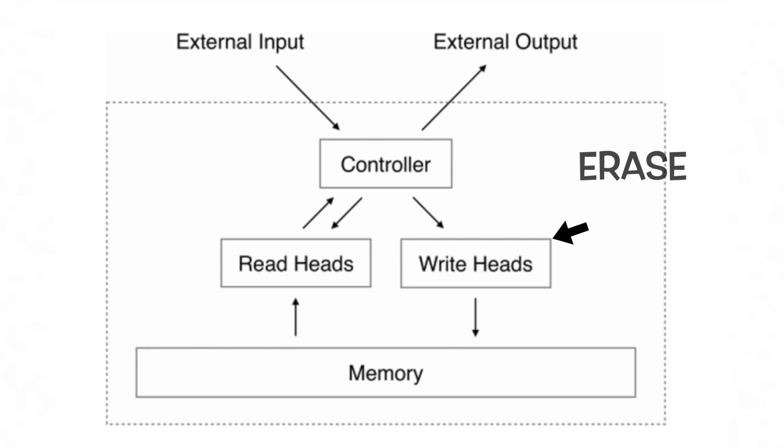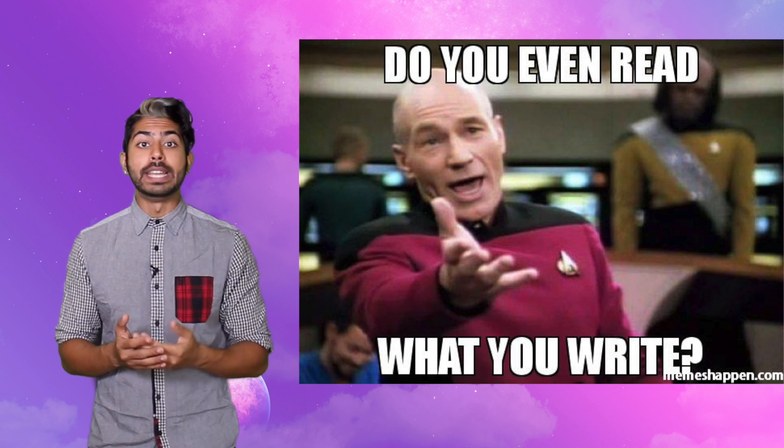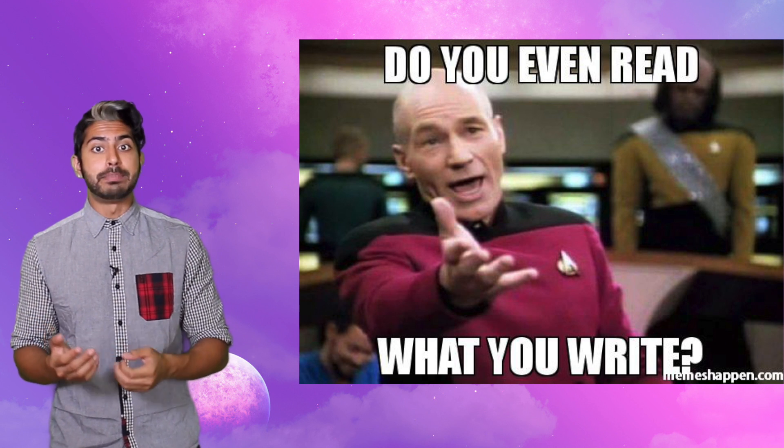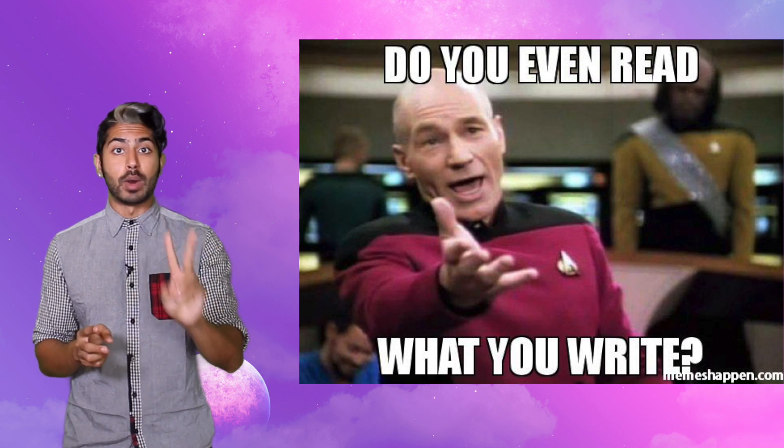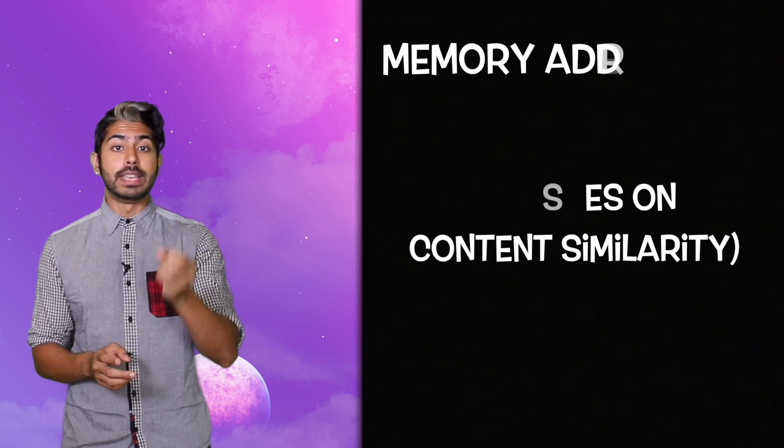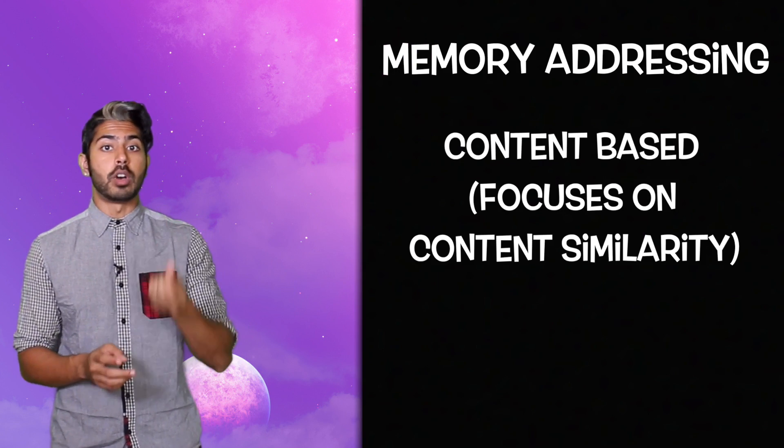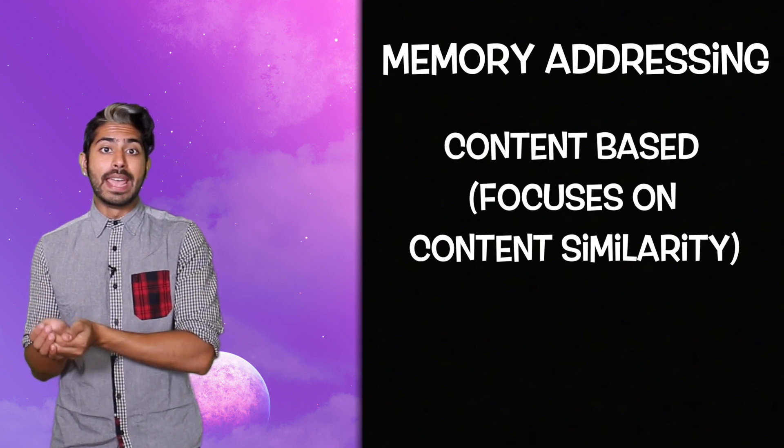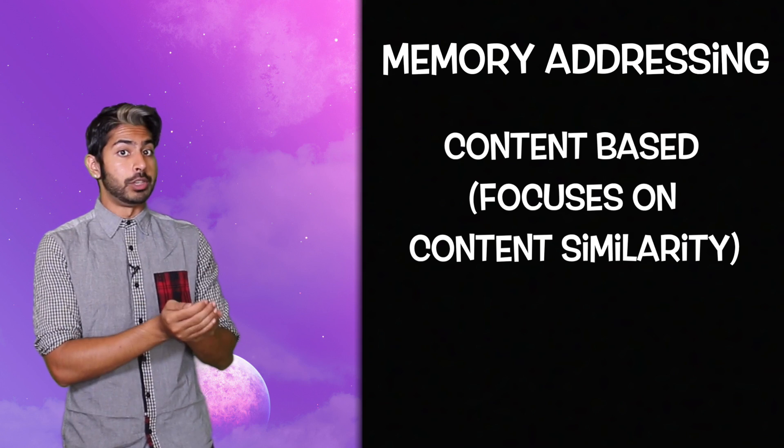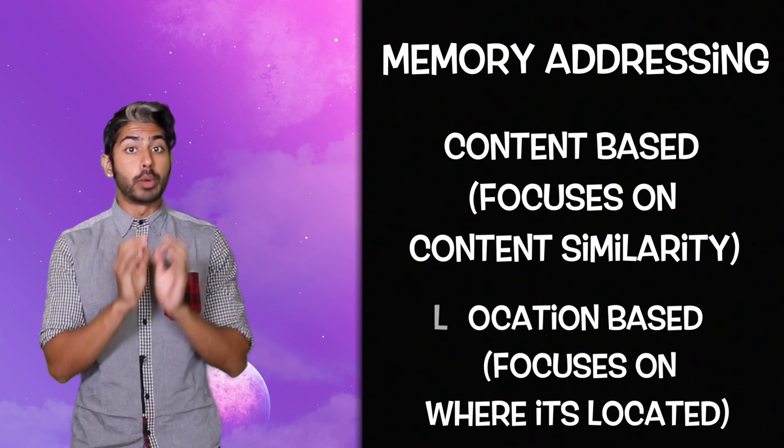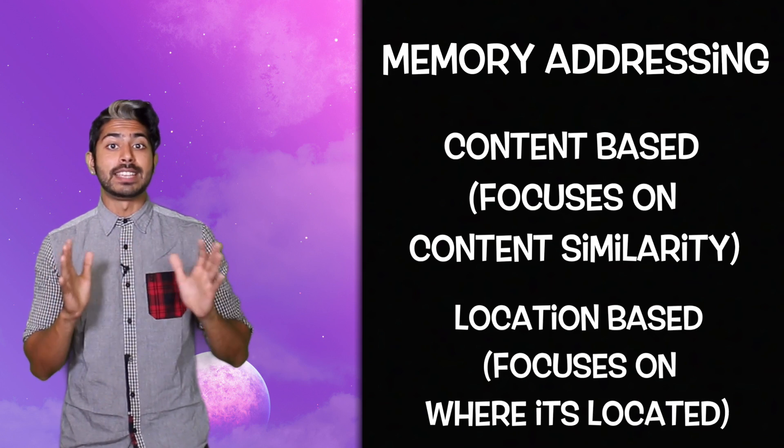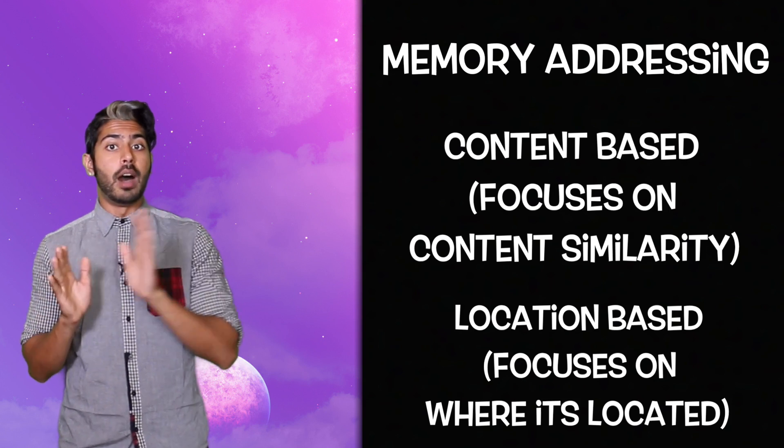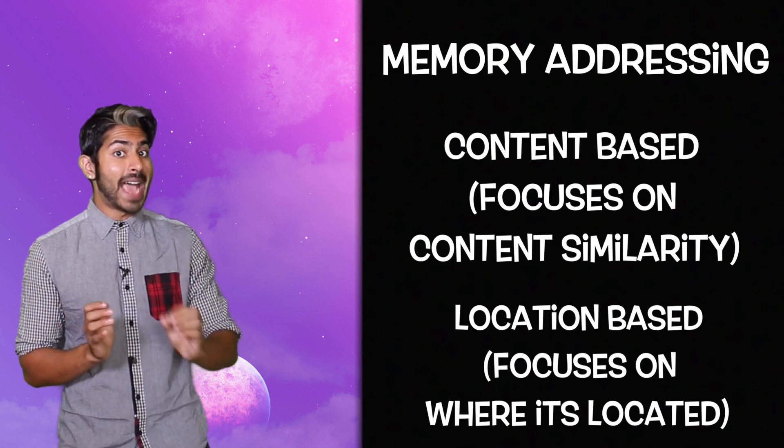A write operation though has two parts, an erase operation, then an add operation. The way these read and write heads are produced is by combining two memory addressing mechanisms. The first is content-based. We focus on locations based on the similarity between their current values and the controller's emitted values. The second is location-based. It facilitates iterations across locations of the memory and random access jumps.